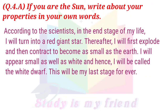According to scientists, in the end stage of my life I will turn into a red giant star. Thereafter, I will first explode and then contract to become as small as the earth. I will appear small as well as white, and hence I will be called the white dwarf. This will be my last stage forever.